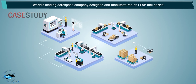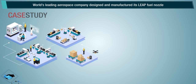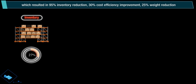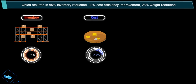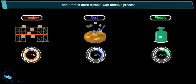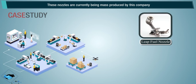A world-leading aerospace company designed and manufactured its fuel nozzle through additive manufacturing with a 20-to-1 part reduction, which resulted in 95% inventory reduction, 30% cost efficiency improvement, 25% weight reduction, and 5 times more durability. These nozzles are currently being mass produced.